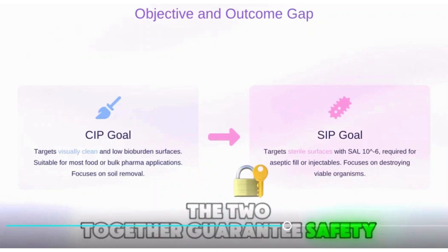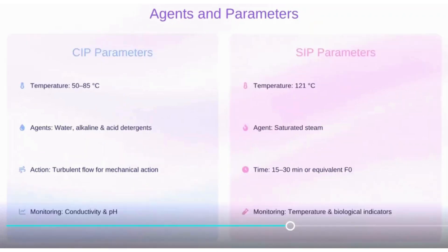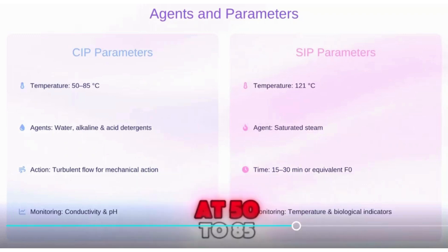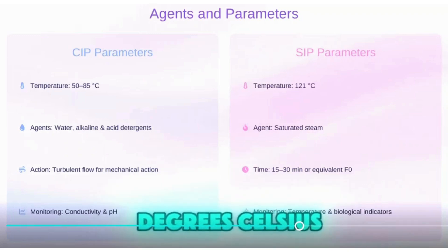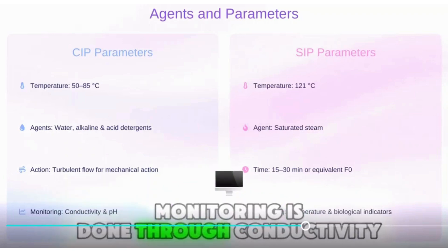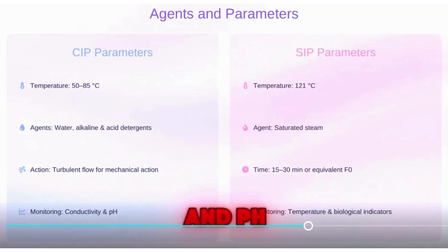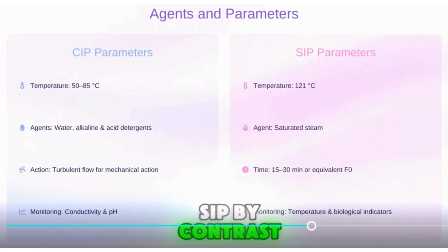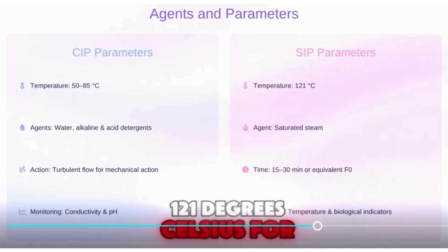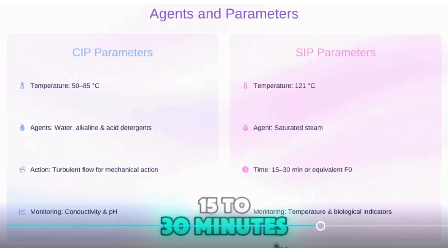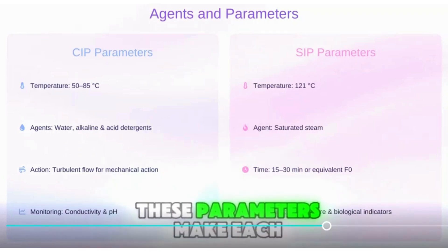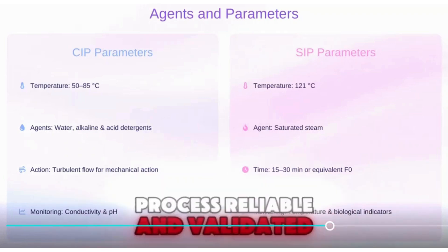The two together guarantee safety and compliance. CIP uses water, alkaline, and acid detergents at 50 to 85 degrees Celsius, relying on turbulent flow for cleaning, with monitoring done through conductivity and pH. SIP, by contrast, uses saturated steam at 121 degrees Celsius for 15 to 30 minutes, monitored with temperature and biological indicators. These parameters make each process reliable and validated.